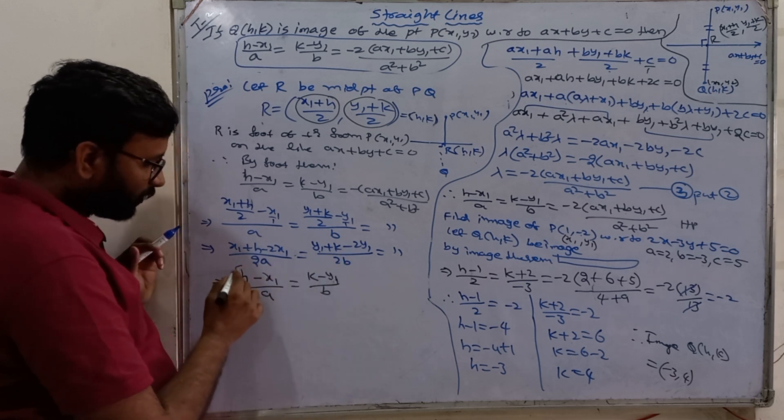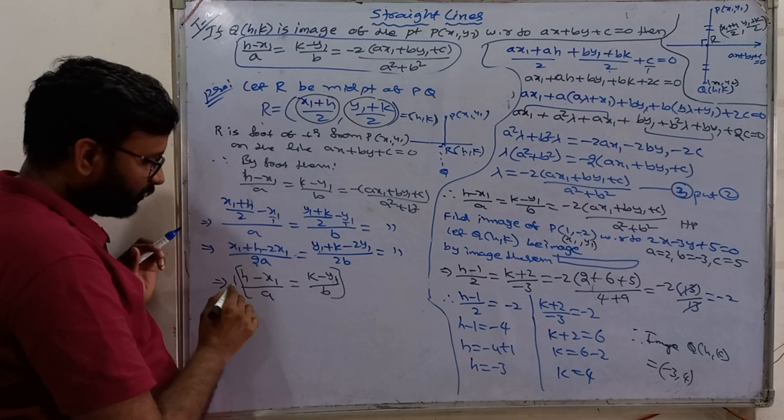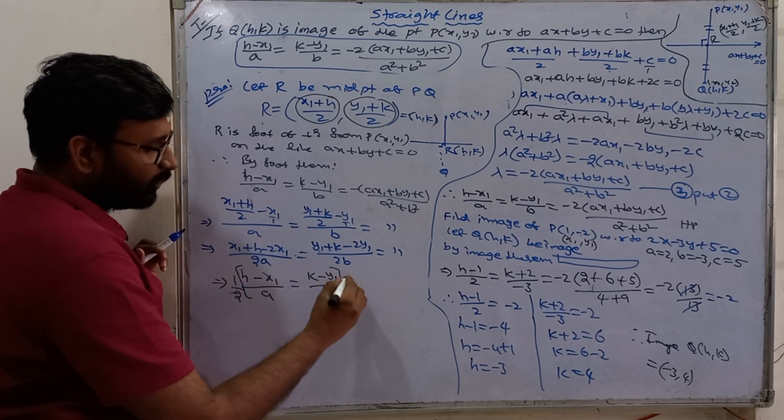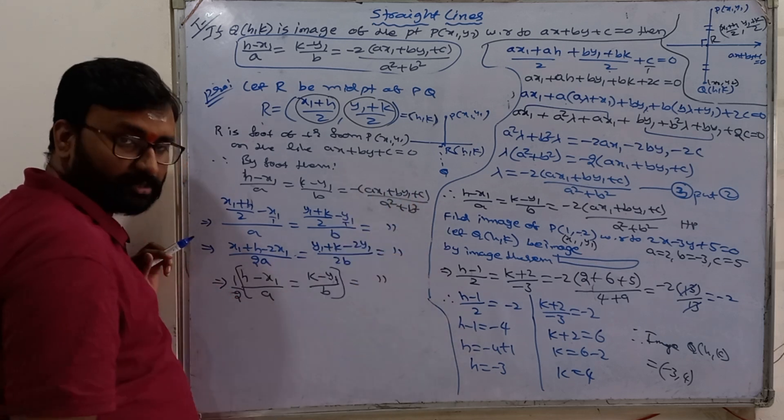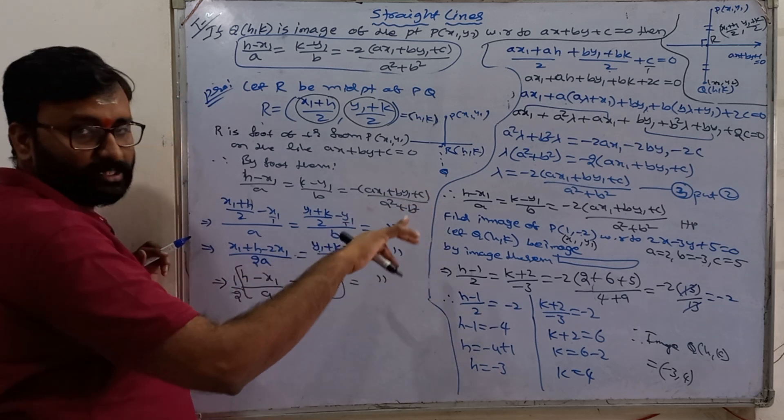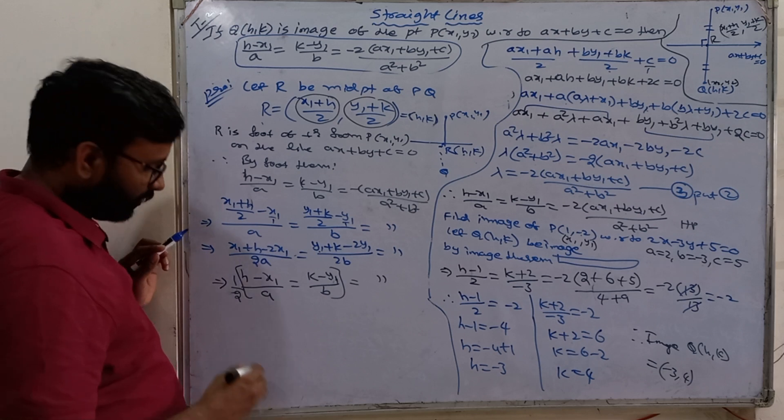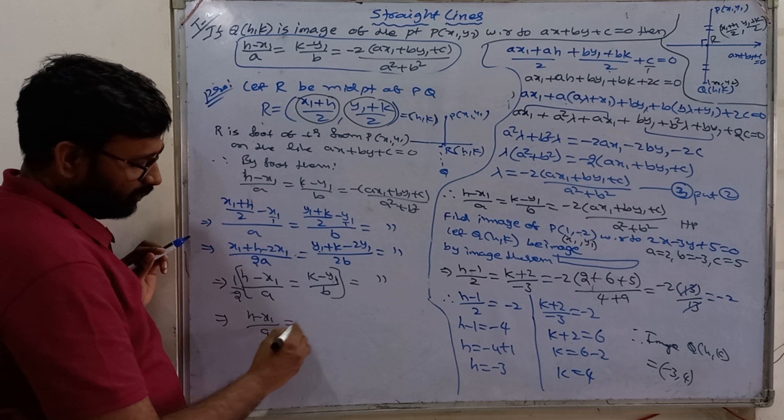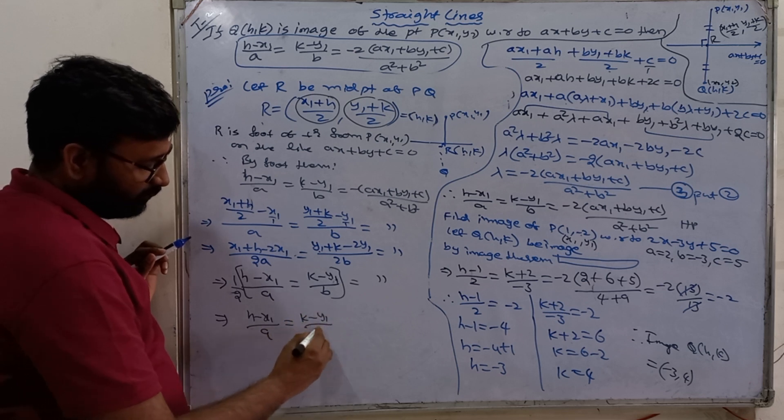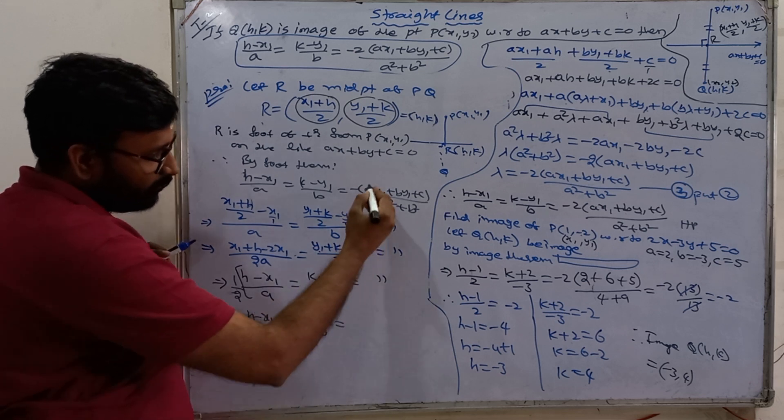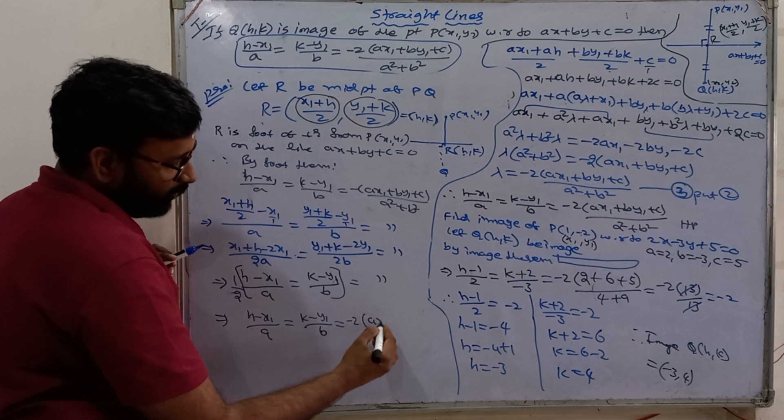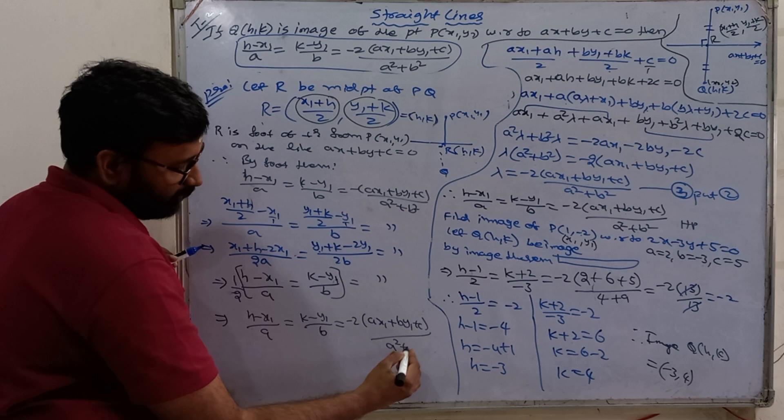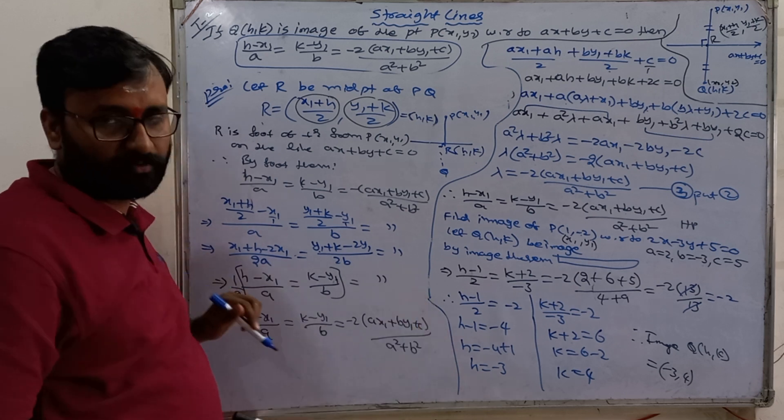I am taking common denominator. 1 by 2 is equal to same RHS. Just 1 bit answer. So that is H minus X1 by A, K minus Y1 by B is equal to minus 2 into AX1 plus BY1 plus C by A square plus B square. This is the proof for image.